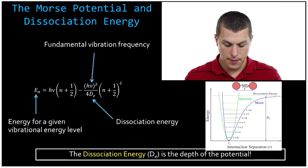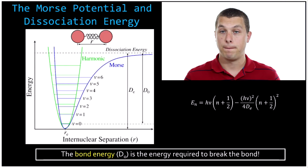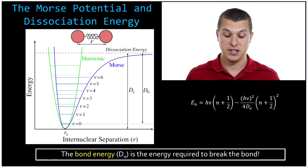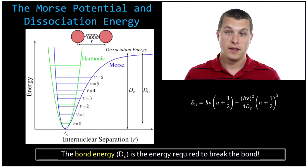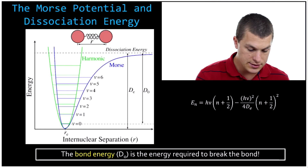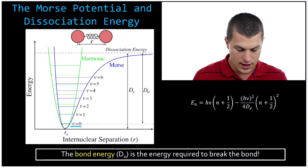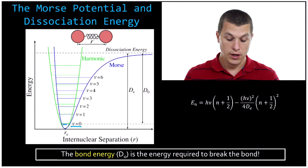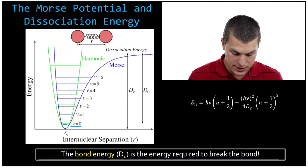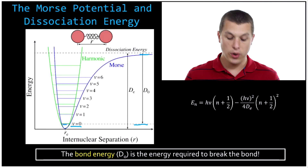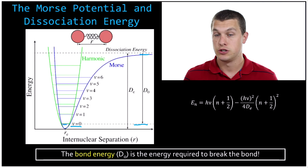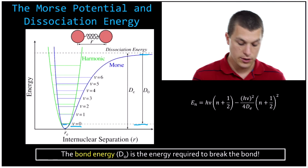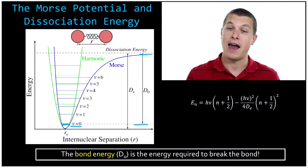A few more things about the dissociation potential. If you want to pull a molecule apart from being totally still, it would take energy exactly equal to the dissociation energy, d sub e. But the zero point energy — the lowest possible energy our molecule can be in — is the zeroth state, and that has some amount of energy. So if we want to dissociate our molecule, we don't actually have to add the full dE. Instead, we have to take it from that zero state up to the dissociation level.